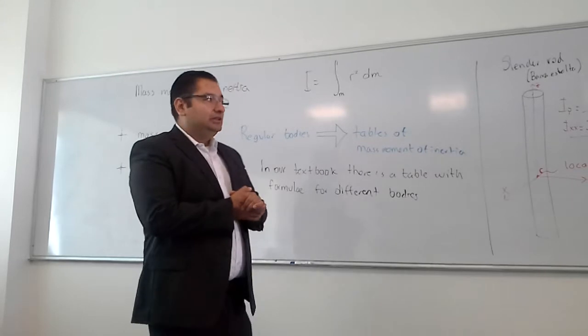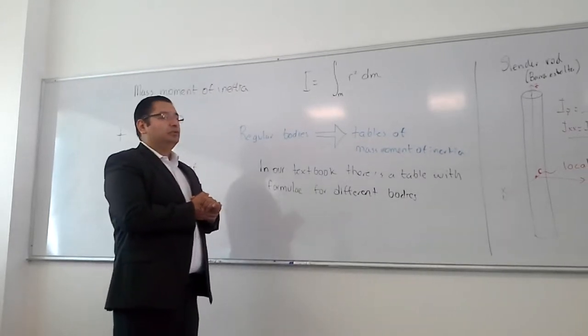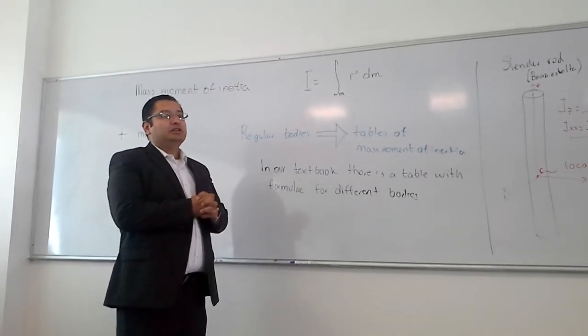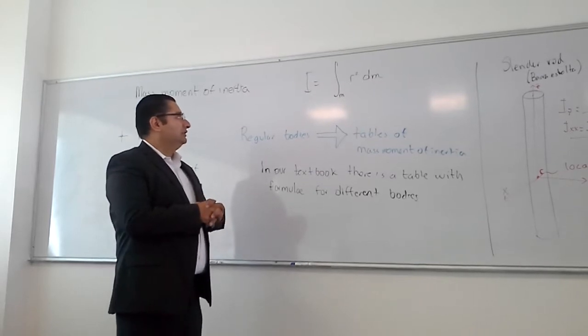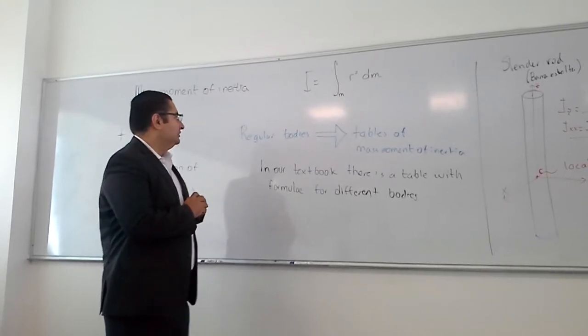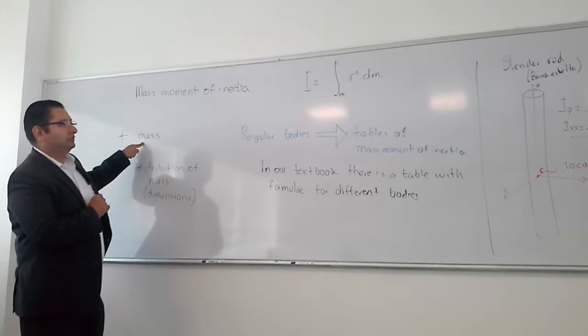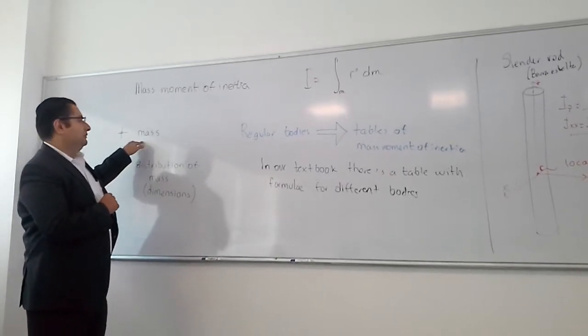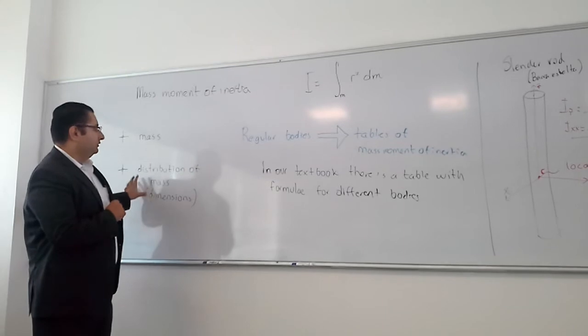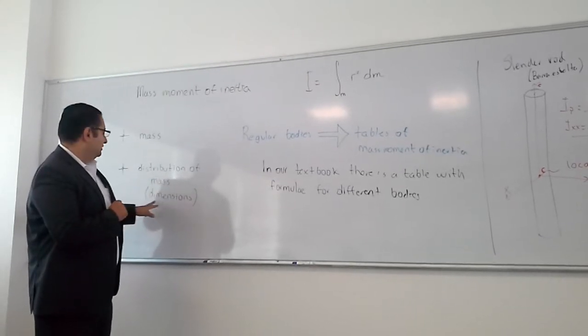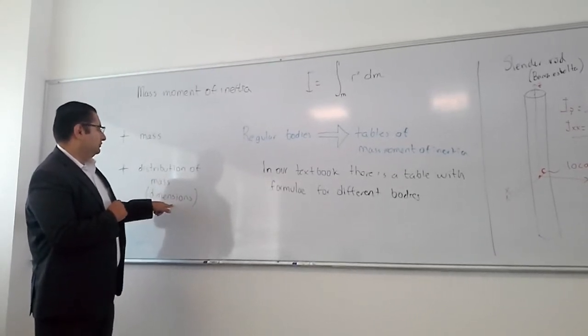Last lecture we discussed the importance of mass moment of inertia and the material it's made of, because density is important. We know that mass is the main variable, and also the distribution of that mass, which means the dimensions involved.